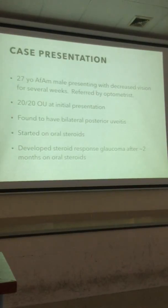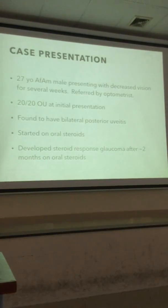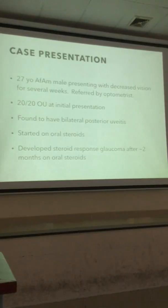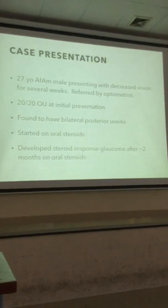Here's a case presentation — a 27-year-old African American male presenting with decreased vision for several years. He's referred by an ophthalmologist with 20/20 vision at initial presentation. He was found to have bilateral clustered uveitis. He was started on oral steroids and developed steroid-response glaucoma after about 2 months on oral steroids.